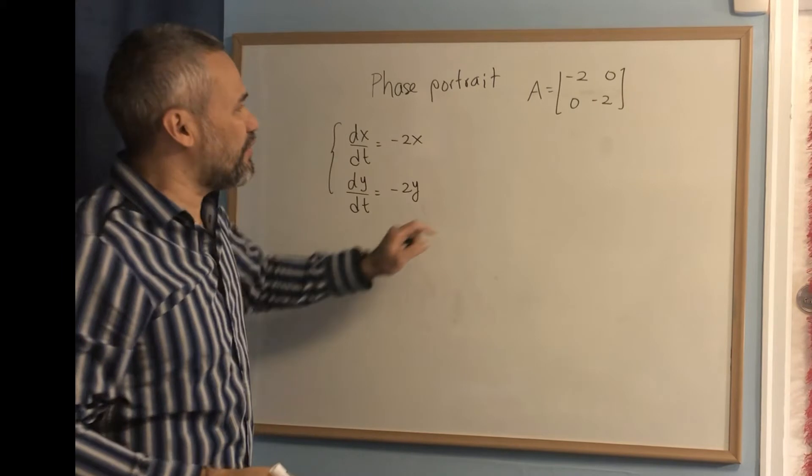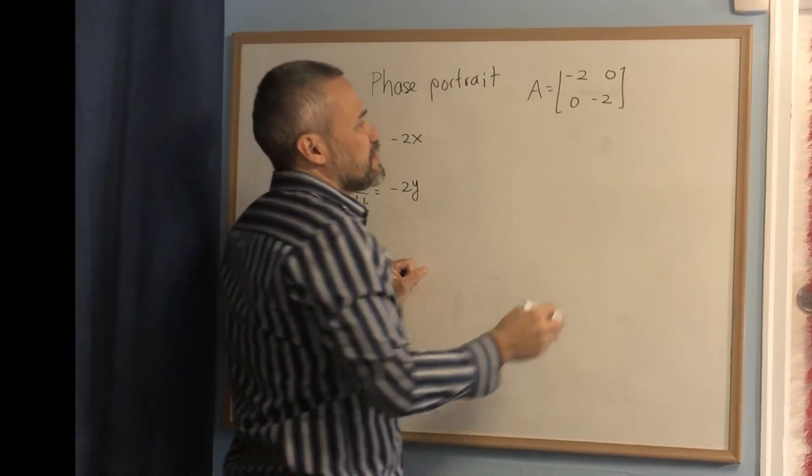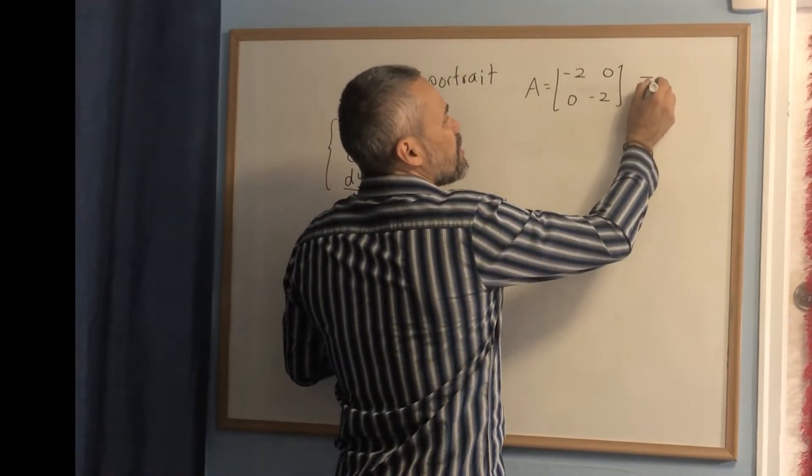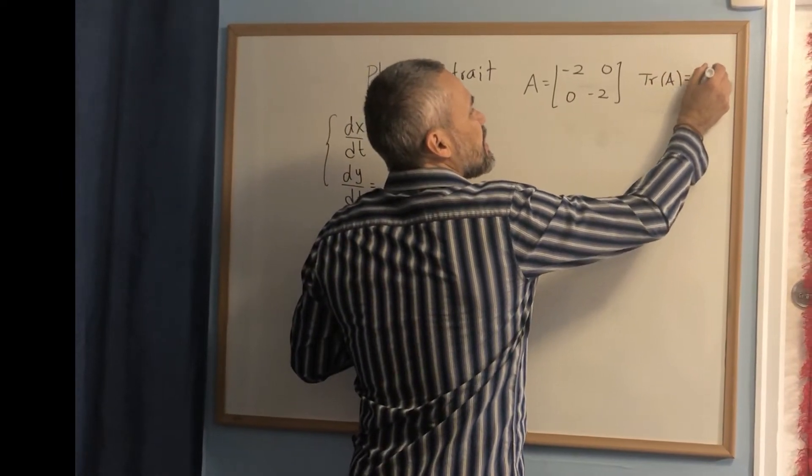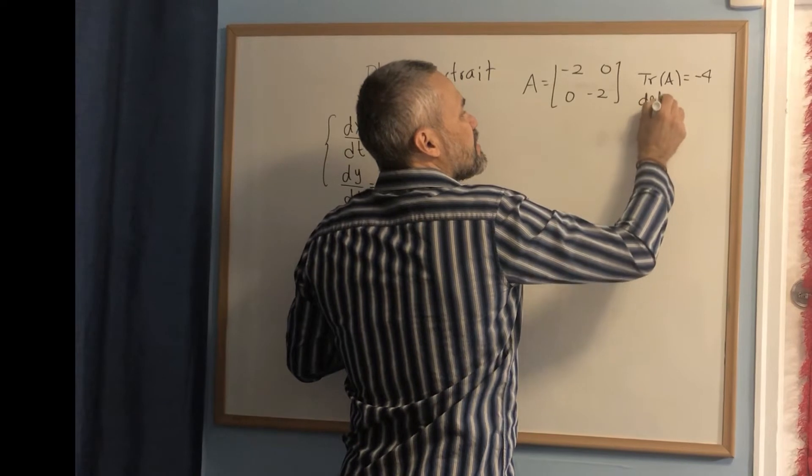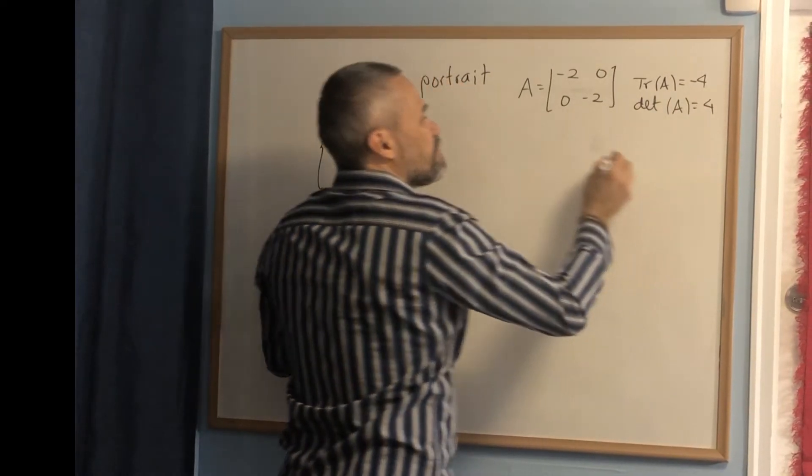And even though we know that the eigenvalues are just one eigenvalue, negative 2, let's do the computations. Trace of a, in this case, is negative 4 and the determinant of a is positive 4.